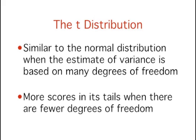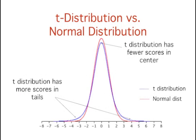The t-distribution is very similar to the normal distribution when the estimate of variance is based on many degrees of freedom. But when there are fewer degrees of freedom, the t-distribution has relatively more scores in its tails. You'll learn more about degrees of freedom in a later section, but they basically refer to how much information an estimated standard error is based on. The number of degrees of freedom is determined by the sample size. This figure shows the t-distribution with 4 degrees of freedom in blue, and the standard normal distribution in red. With 4 degrees of freedom, the t-distribution has relatively fewer scores in the center and more in the tails.